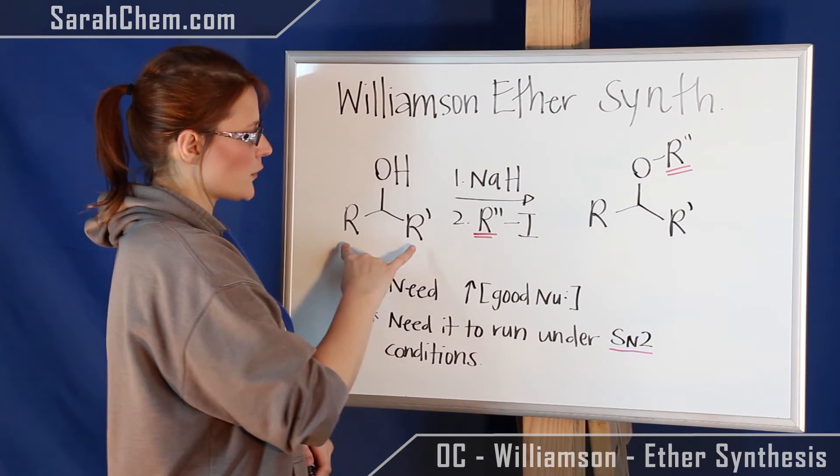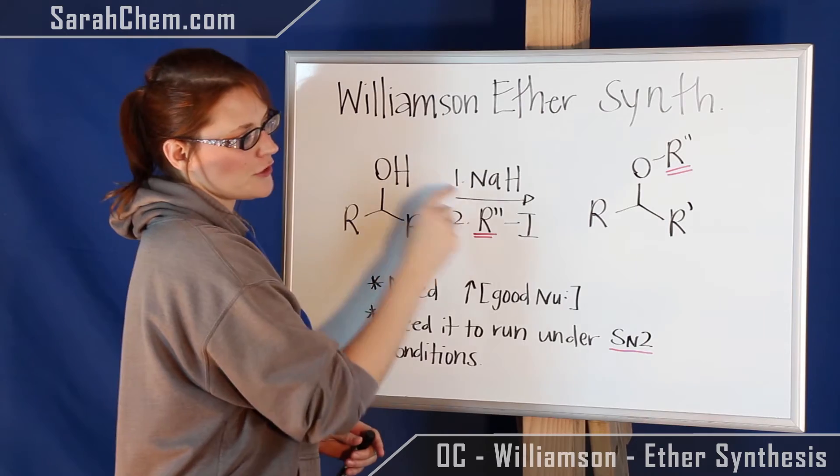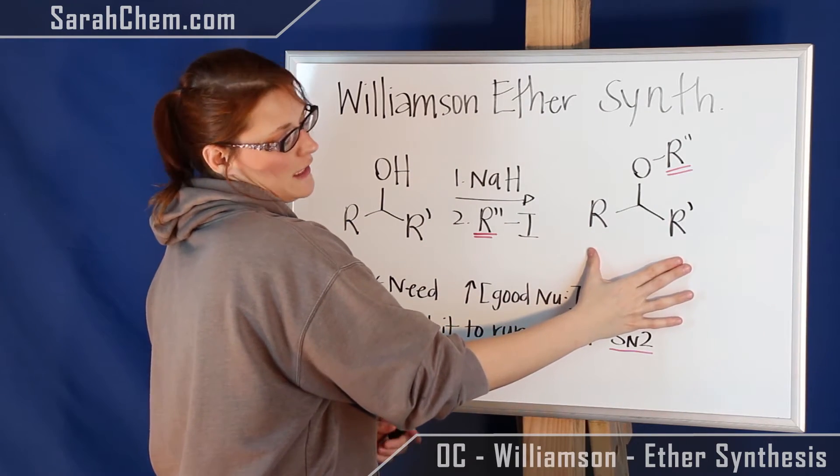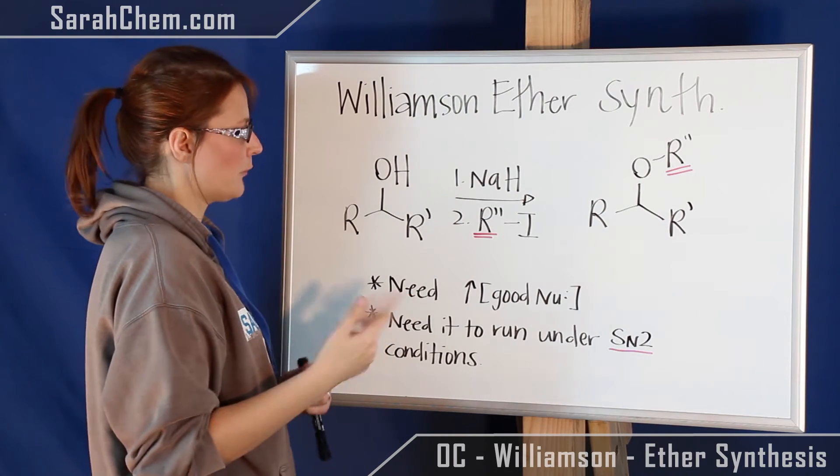So if we take a look at that, we're going to start with an alcohol and react it with these two steps to make our final product, which is an ether. That's why it's called Williamson Ether Synthesis, because we're synthesizing an ether.